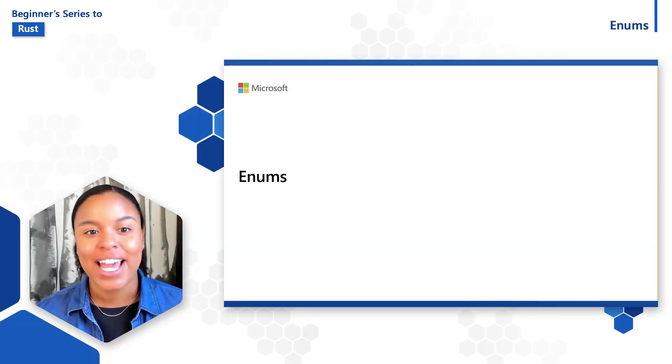Enums are a custom type that lists all the possible variants or enumerations of some data. In this video, we'll explore how to define and use enums.